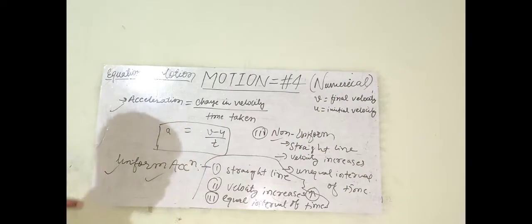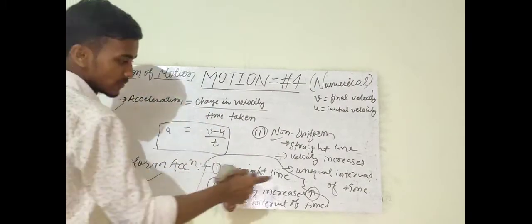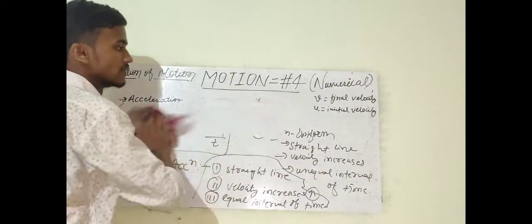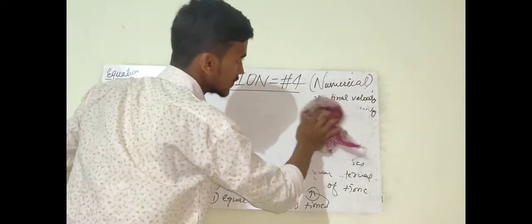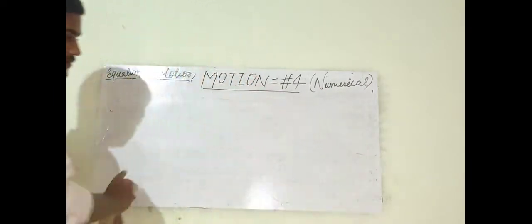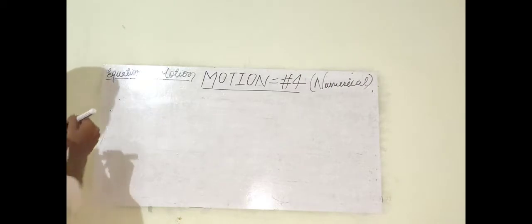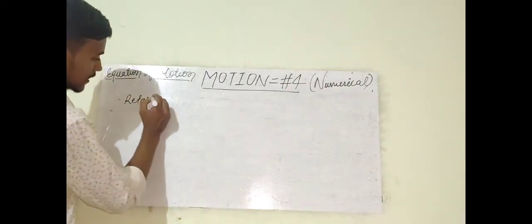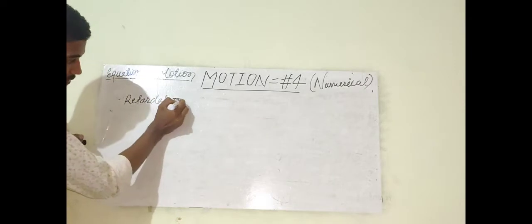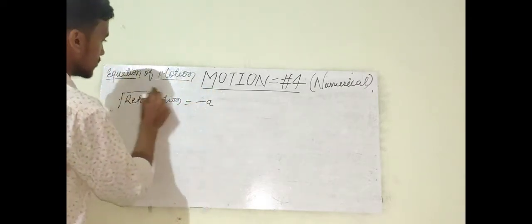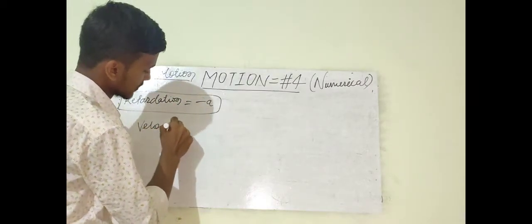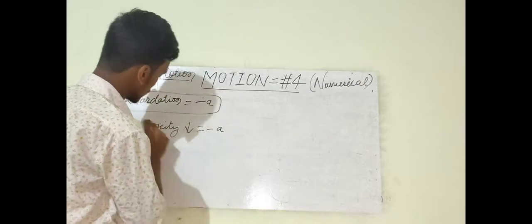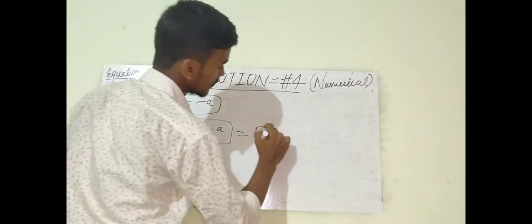One more term was retardation. If acceleration has a negative sign, this is called retardation. In retardation, you just need to know that if a body's velocity is decreasing, it means negative acceleration is occurring and the body is undergoing retardation.